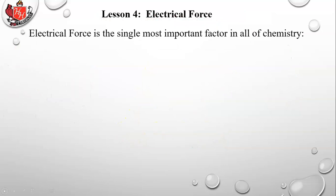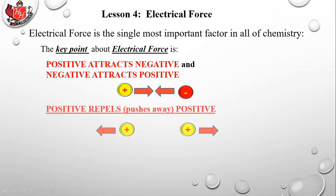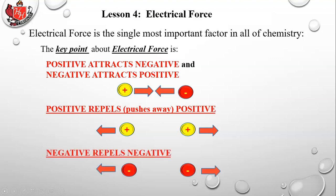Electrical force is the single most important factor in chemistry. The key point is that positive attracts negative and negative attracts positive. Positive repels positive, and negative repels negative. That seems simple and yet it's at the center of everything we talk about in chemistry — this attraction between opposite charges and the repulsion between like charges.